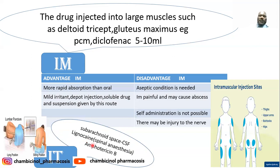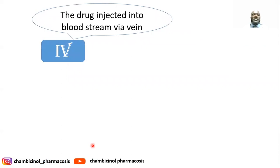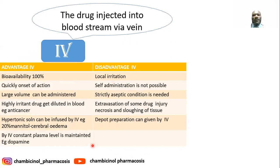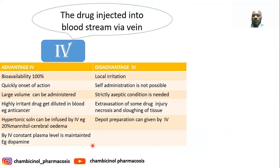We also have the intravenous route — the most common parenteral route. The drug is injected directly into the blood through a vein. Advantages: bioavailability is 100%; quick onset of action; larger volumes can be administered; highly irritant drugs such as anti-cancer agents can be administered; hypertonic solutions like 20% mannitol can be given IV for treatment of cerebral edema; and constant plasma levels can be maintained, for example with dopamine.